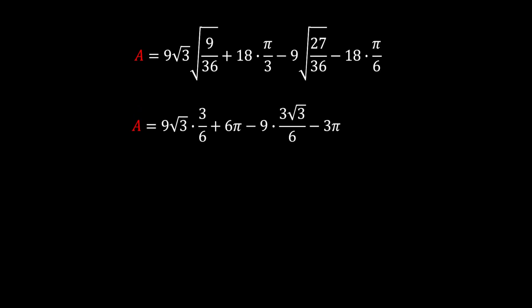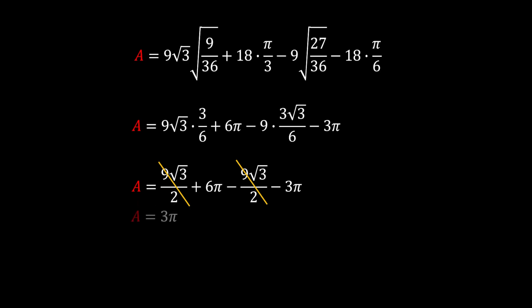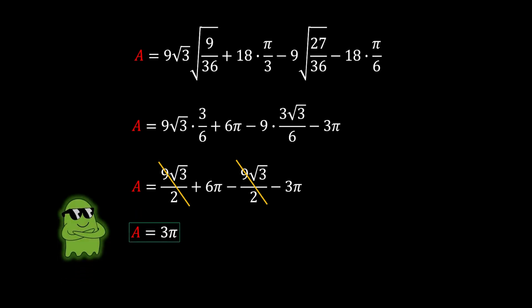Simplifying the first and third terms, we can cancel them and we get that our area is equal to 6π − 3π, which means the area is equal to 3π square units — the same solution as method one. There are other ways to solve this problem using integrals and without using integrals, but I'll leave those for you to find and write in the comments below. If you enjoyed this video, give it a like and subscribe to the channel. Until next time, take care.